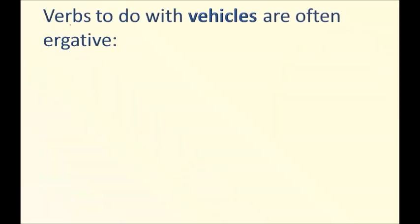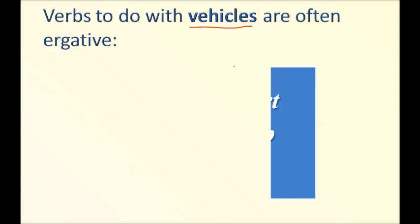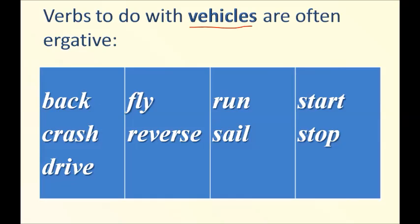Verbs to do with vehicles are also often ergative. This list includes: back, crash, drive, fly, reverse, run, sail, start, stop. All these verbs related to vehicles or driving are also ergative. For example: 'I drive the car' and 'The car drives.' Similarly, 'We fly kites' and 'The kite flies.' Using them produces an ergative sense and helps you express your sentence in different ways.